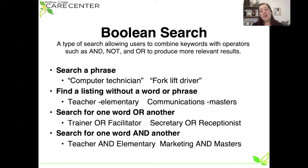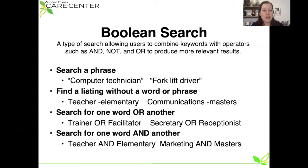Boolean search is the language that a computer uses when it is understanding a search. It's a type of search allowing users to combine keywords with operators. So if you understand how to speak the computer's language, you will get a search that more closely aligns with the results that you're hoping for. I go in order of importance here — the top one is searching a phrase. If your prospective job title is more than one word, let's take computer technician as an example.